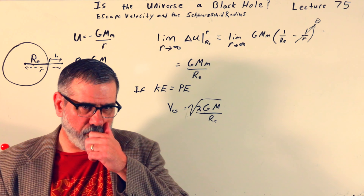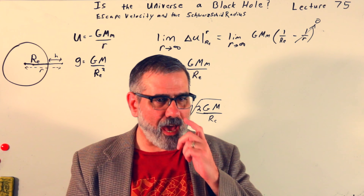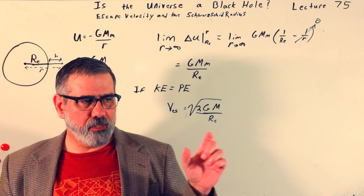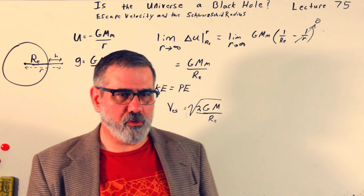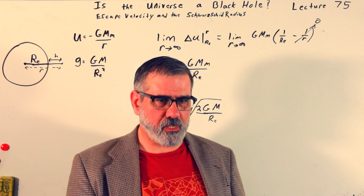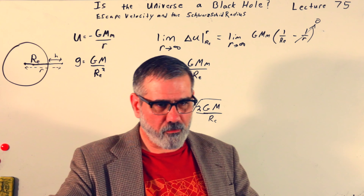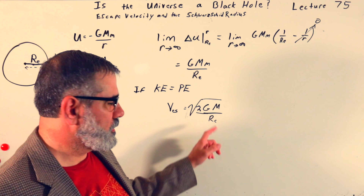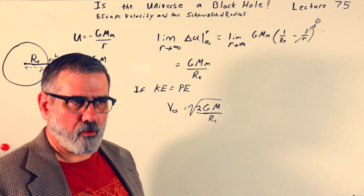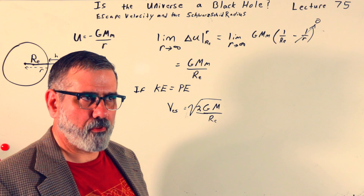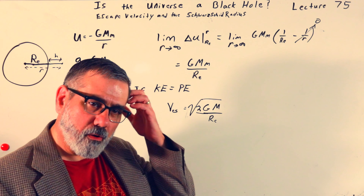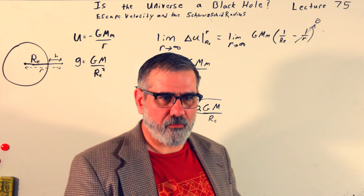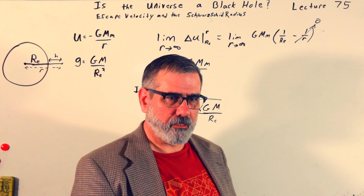So when we were considering the trajectory or scattering event, the distance of closest approach was as close as we got to the center of the Sun. Now, for launching from Earth, the distance is the radius of the Earth — that's where the force is greatest and what we have to overcome.